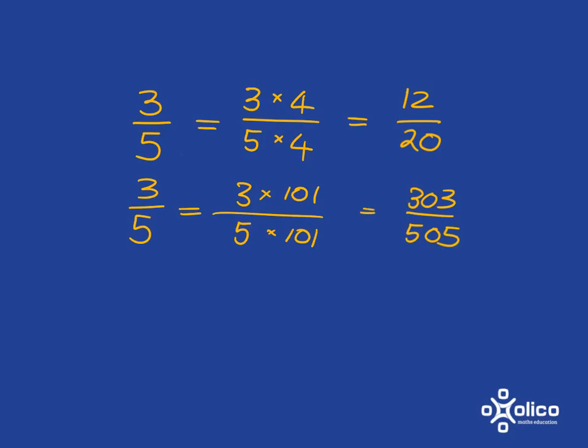And now this is the new bit, this works when we get to algebra too. If we take 3 fifths and we multiply top and bottom of the fraction by, let's say, x, we are going to get an equivalent fraction. So, 3 over 5 and 3x over 5x are equivalent.